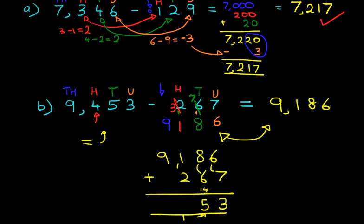We're going to do the hundreds column. We've got 1 plus 2 is 3 and plus 1 is 4. And lastly, we've got the thousands column. Therefore, this number 9453 is the same as this number over here. Therefore, this answer 9186 is correct.